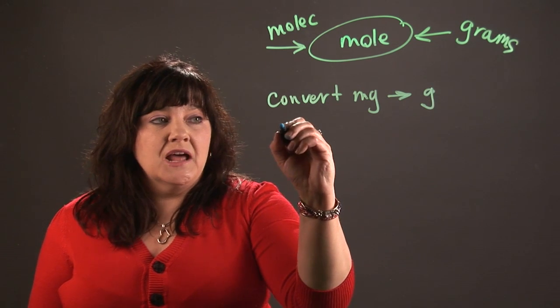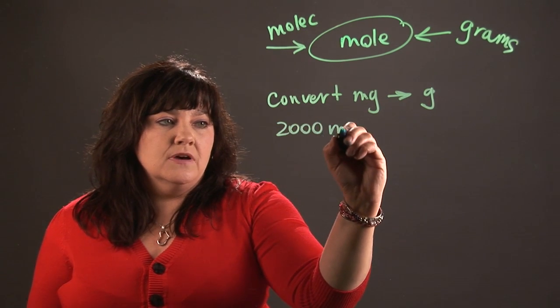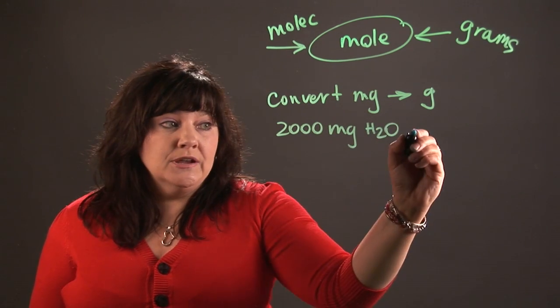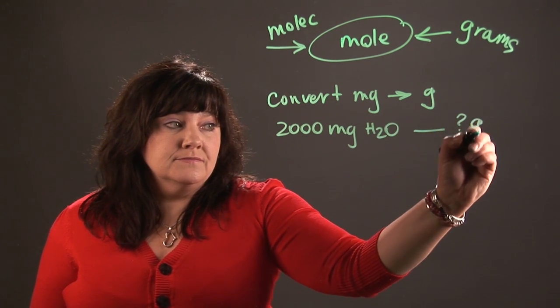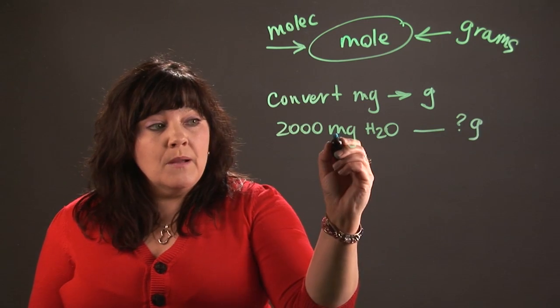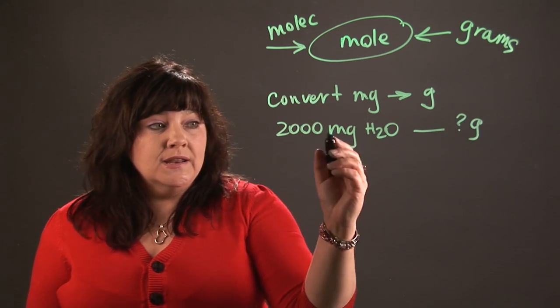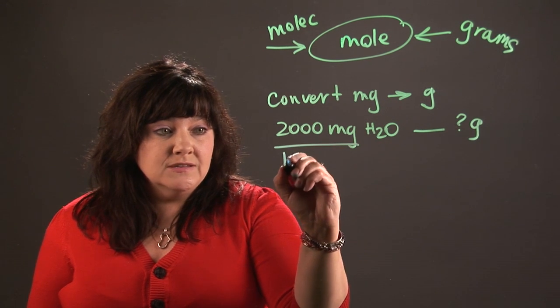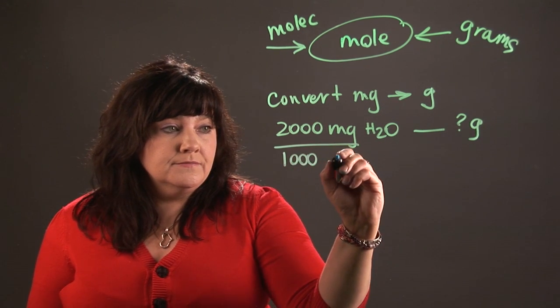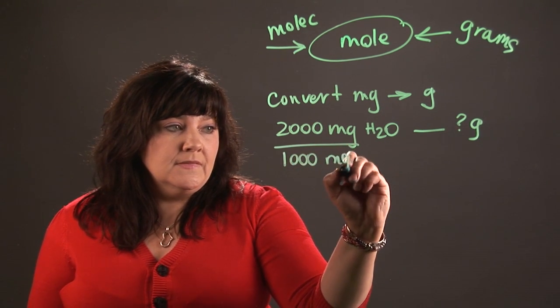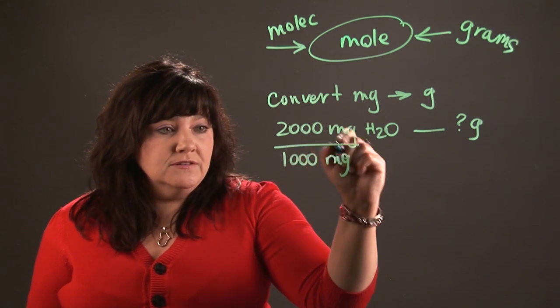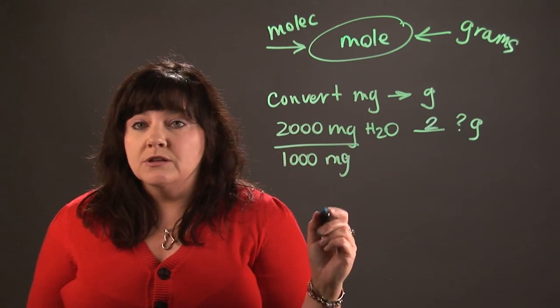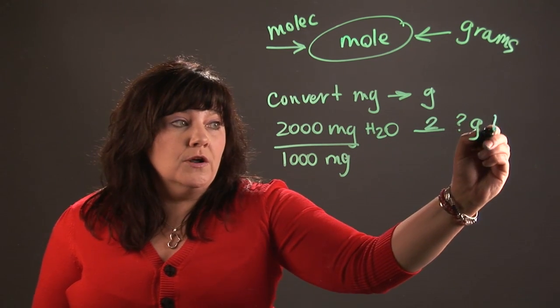So let's say that I have 2,000 milligrams of water. First I need to figure out how many grams that is. Well remember milli means a thousand. So in every gram there's going to be a thousand milligrams. So what I would have to do is divide this by a thousand. And a thousand divided by 2,000 that's going to give me two. So 2,000 milligrams of water would be two grams of water.